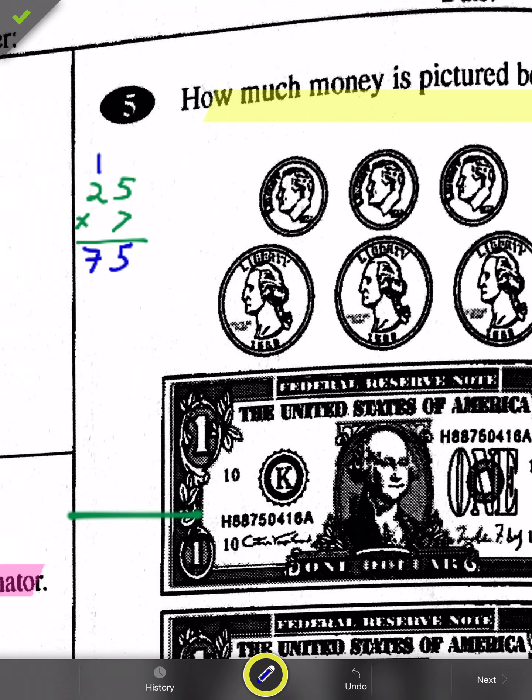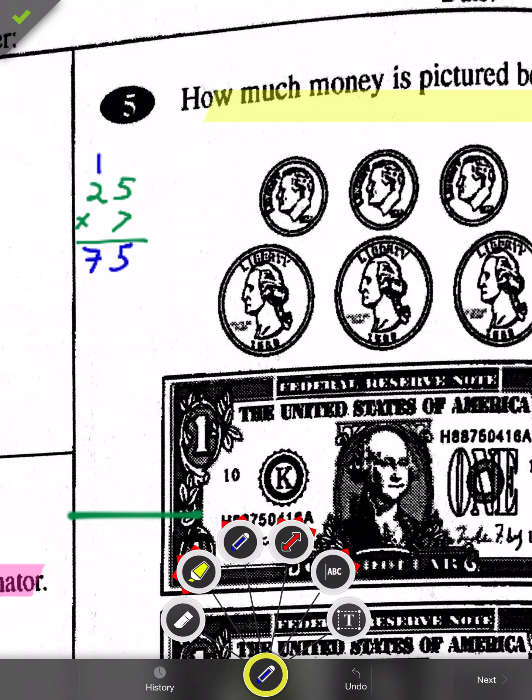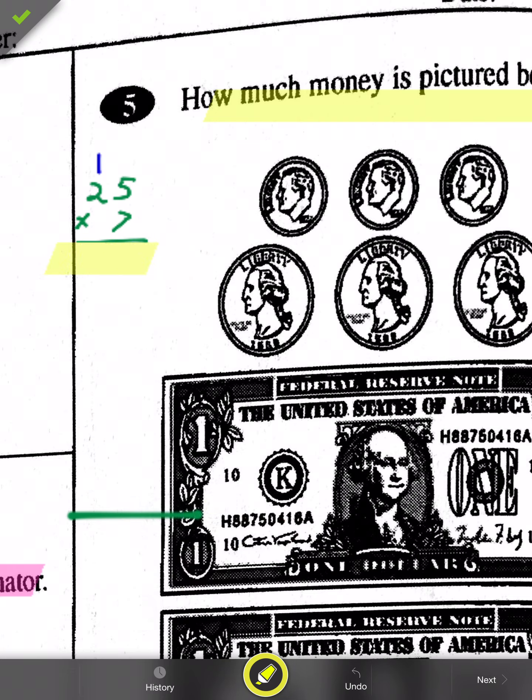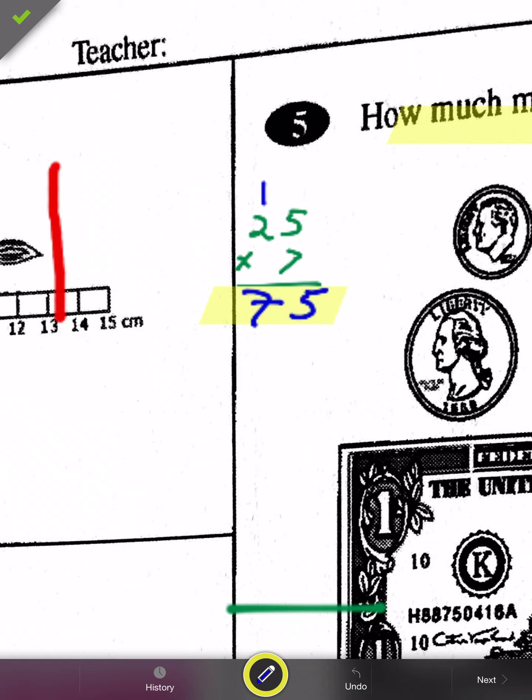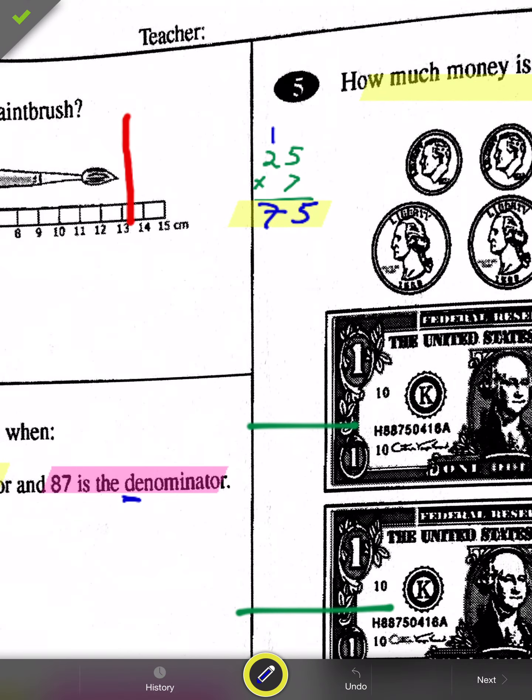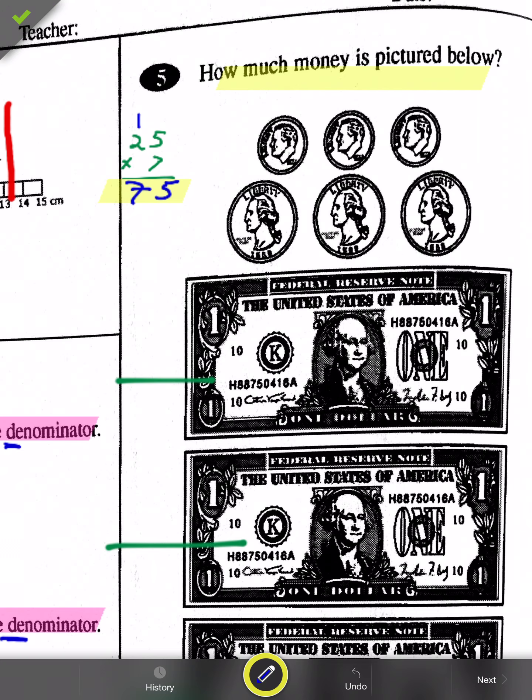We have 3 dimes, and what we're going to do is we're going to count by 10s starting with 75. Okay, so I'm going to start counting by 10s. Starting with the 75, we're going to count by 10s and how many 10s are we going to add? We're going to add three because I have three dimes. So 75, 85, 95, 105.